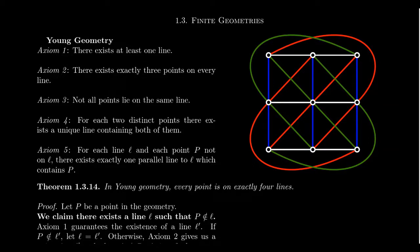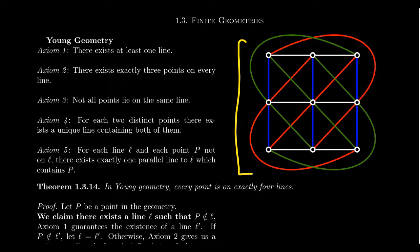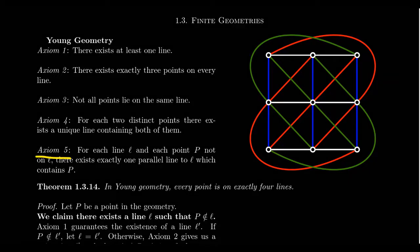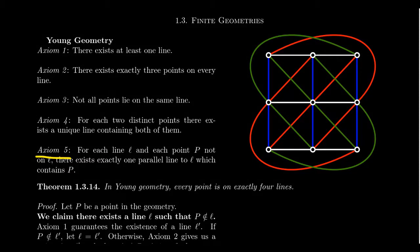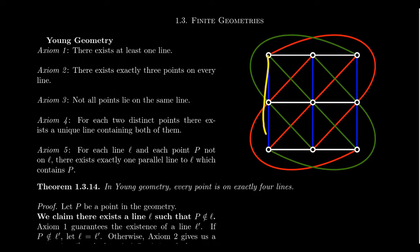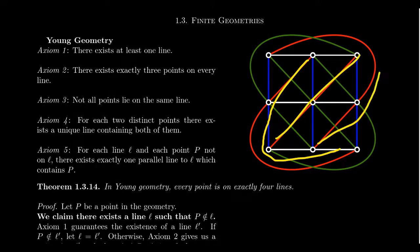Young's geometry satisfies the first four axioms of Fano geometry. If we forget the fifth axiom, both Fano geometry and Young's geometry are models of axioms one through four. Where they disagree is axiom 5. Axiom 5 of Fano geometry says there are no parallel lines — but Young's geometry does have parallel lines. The white lines are parallel, the blue lines are parallel, the red lines are parallel, and so are the green lines.